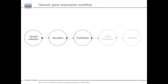A typical generic gene expression workflow looks like this: it starts with sample collection, which can happen in the field or in the lab. Then you do disruption to open up the cells or tissues. Then you do the actual purification to get your nucleic acid out. Then cDNA synthesis and analysis, depending on the technique you're using, followed by data interpretation. I'll focus on the first three parts — sample collection, disruption, and isolation — because they're integral to the process.